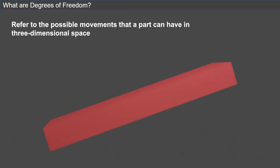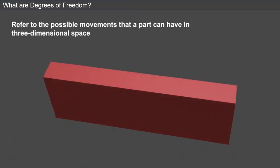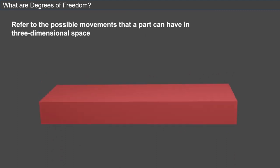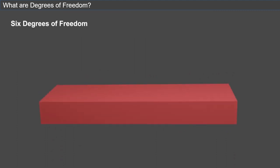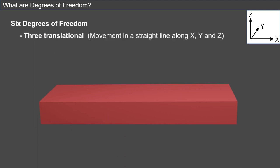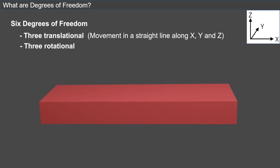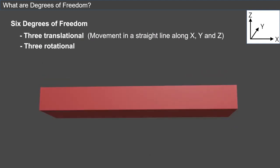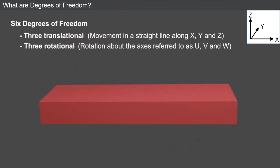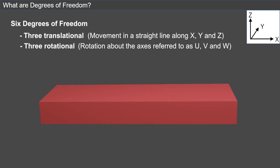Degrees of freedom refer to the possible movements that a part can have in three-dimensional space. There are six degrees of freedom: three translational, which govern movement in a straight line along the X, Y, and Z axes, and three rotational degrees of freedom, which control the rotation about these three axes, referred to as U, V, and W.